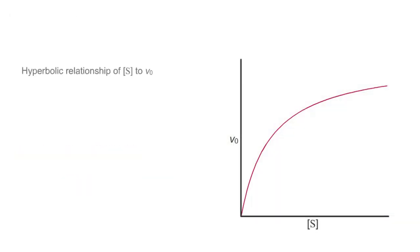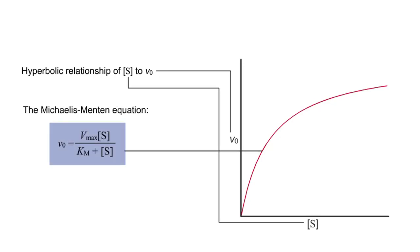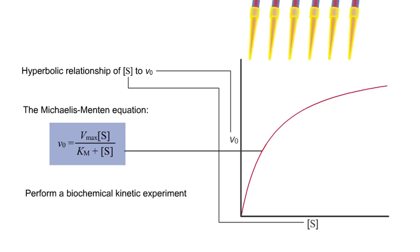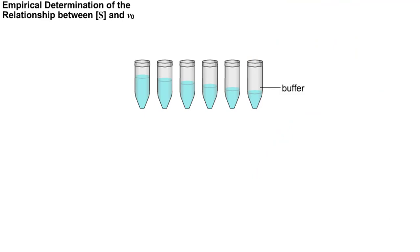To help you understand the hyperbolic relationship between the substrate concentration and the rate of an enzyme-catalyzed reaction, which is described by the Michaelis-Menten equation, we will now demonstrate a kinetic experiment. To experimentally determine the relationship between substrate concentration and initial velocity, a biochemist sets up a series of test tubes for the reaction.